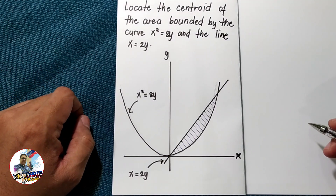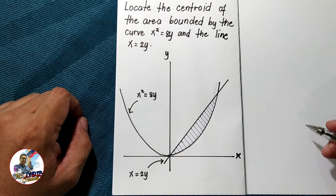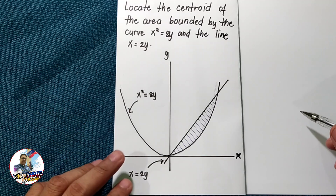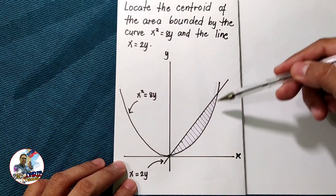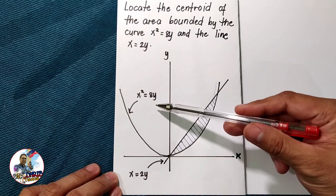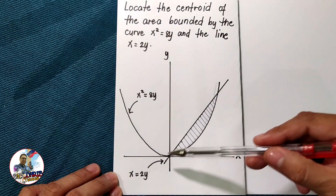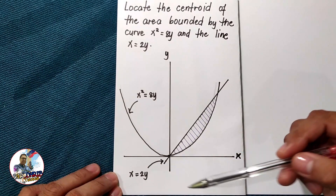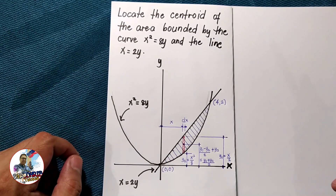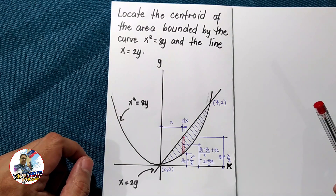Let us have the first problem: locate the centroid of the area bounded by the curve x² = 8y and the line x = 2y. We have this curve represented by x² = 8y and this line represented by x = 2y.